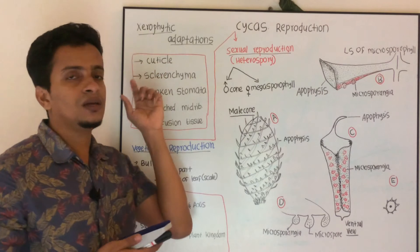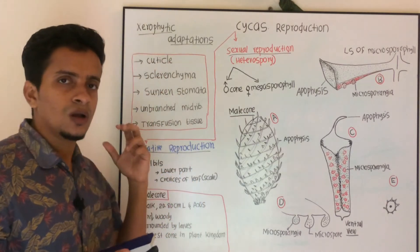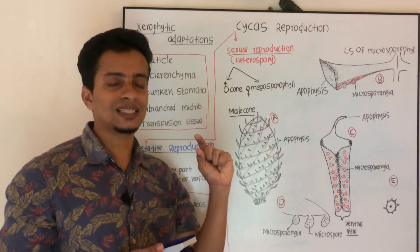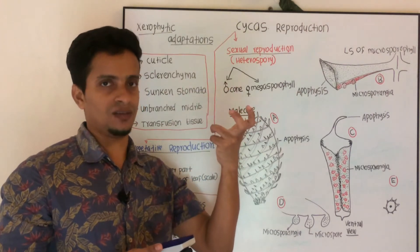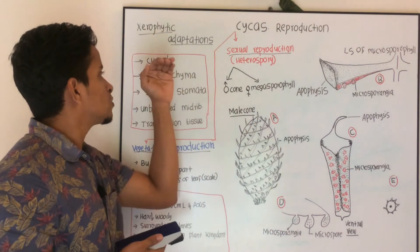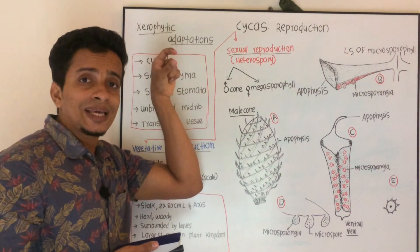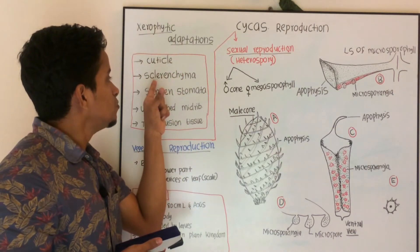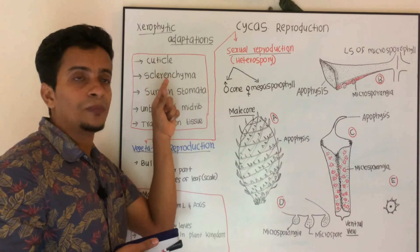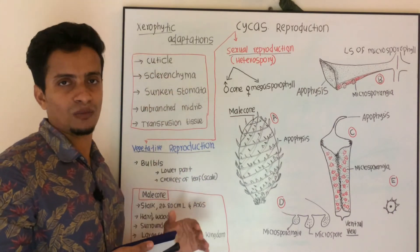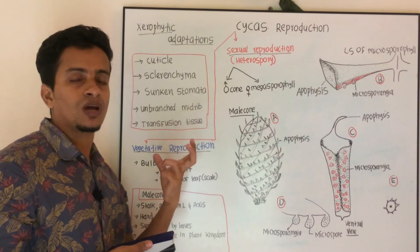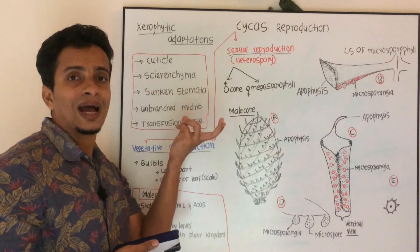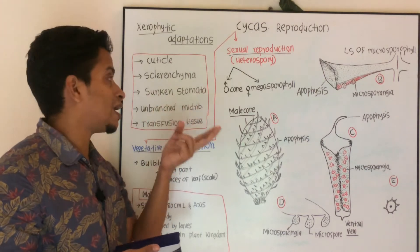First of all, you can see a thick cuticle. The function of the cuticle is that it reduces excess transpiration. Coming to the second point, you can see they have a well-developed sclerenchymatous hypodermis. This sclerenchymatous hypodermis is also a xerophytic adaptation.